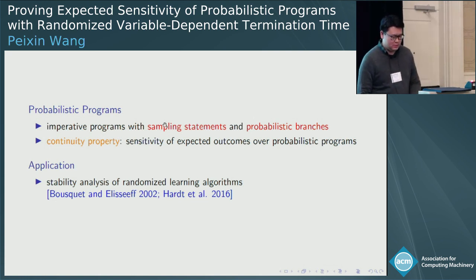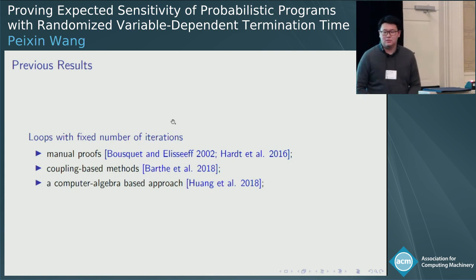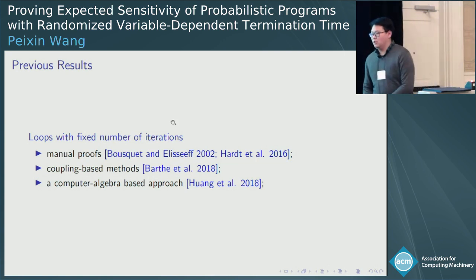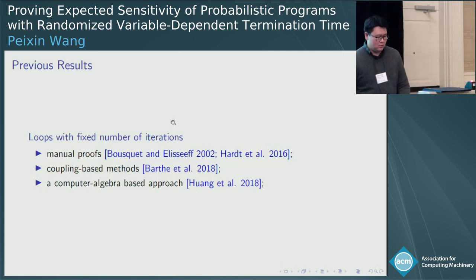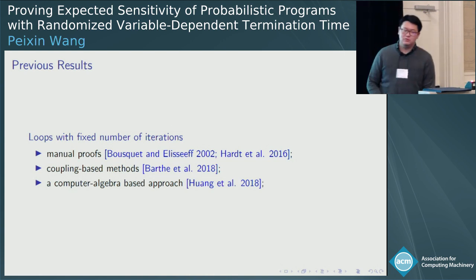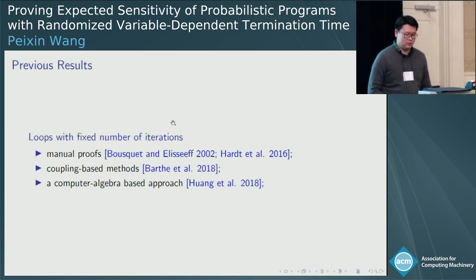One application is stability analysis of randomized learning algorithms. There are many previous approaches that can handle expected sensitivity analysis well, such as analysis for machine learning algorithms through martingale proofs. Coupling-based methods can also work well on several examples from machine learning to statistical physics. And there is a computer algebra-based approach that can calculate tight sensitivity bounds. However, they work only on loops with fixed numbers of iterations, and in reality many probabilistic while loops have randomized termination time, so previous methods cannot handle such examples.